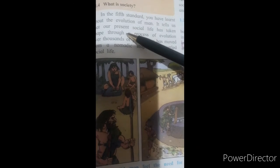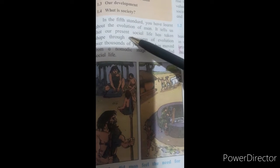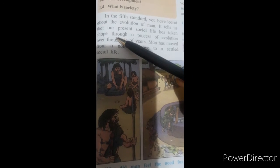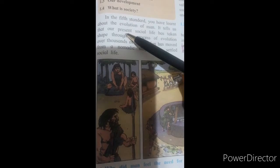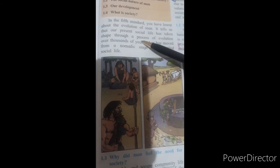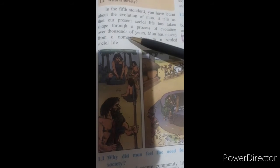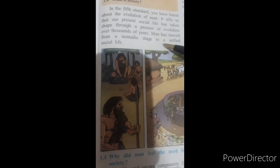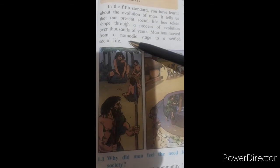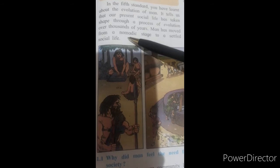It tells us our present life or our present social life has taken shape. Nowadays, how we are living? In luxurious life. In the past, we survived a lot. Man has moved from nomadic stage to a settled life. Nomadic stage means in the past, how man was living? Without clothes.